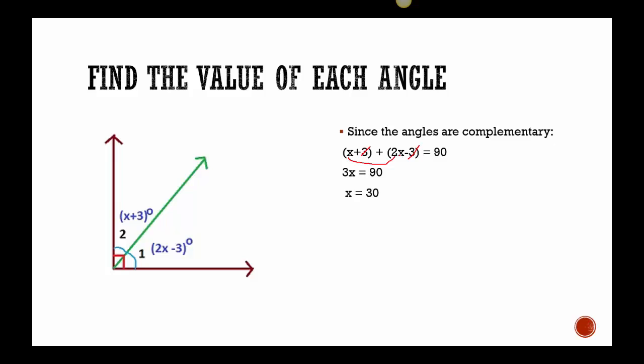I'm going to divide both sides by 3 to get 30. Caution, you're not done. A lot of times you're used to solving for x and you're finished, but the question wasn't solve for x. It was find the angles. So I need to plug this 30 back into these equations. Start with this one because it's easier. x plus 3. So 30 plus 3 is 33. There's angle 2. And then to get angle 1, I do 2 times 30 minus 3. So 2 times 30 is 60. 60 minus 3 is 57. So now I know both angles.